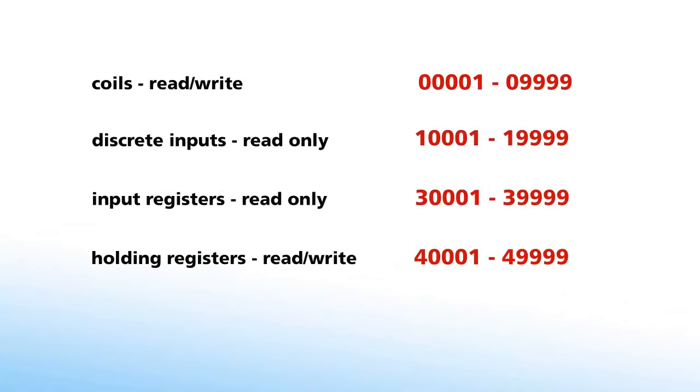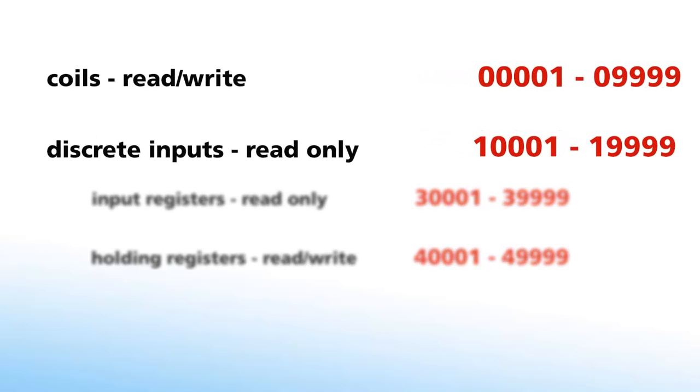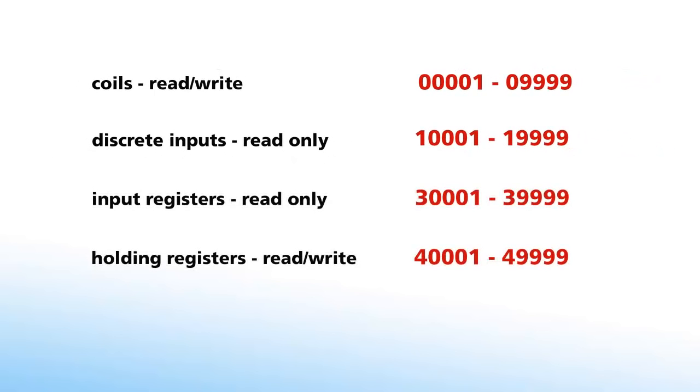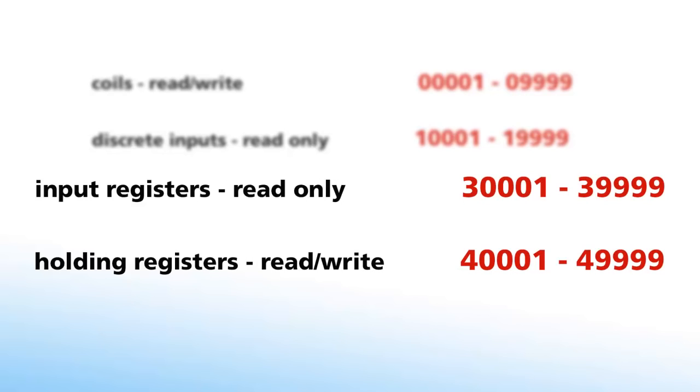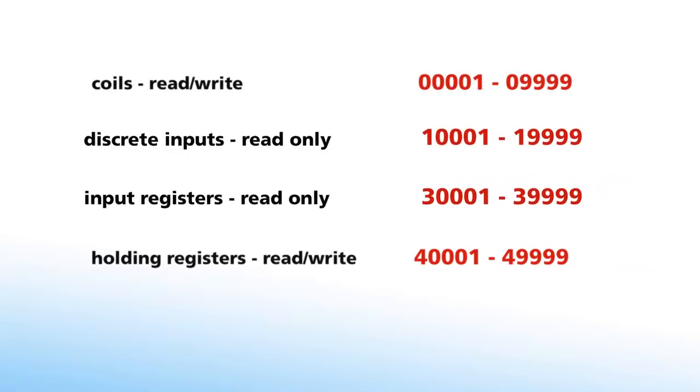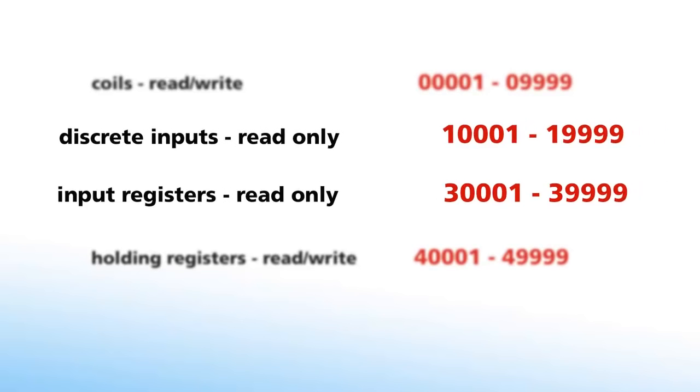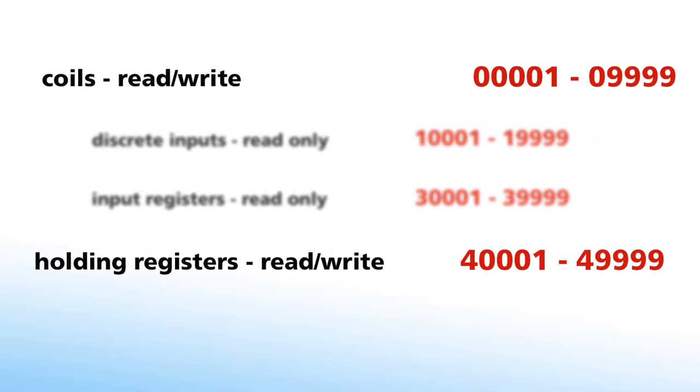Now let's talk about Modbus' eccentric addressing system and the different data tables. There are four tables where information is stored. Two tables store simple discrete values called coils and two store numerical 16-bit values known as registers. For each type of data, there is one read-only table and one read-write table.